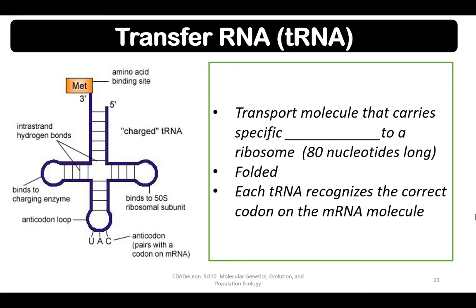Transfer RNA or tRNA is a transport molecule that carries a specific amino acid to a ribosome. tRNA is about 80 nucleotides long. It is folded, and each tRNA recognizes the correct codon on the mRNA molecule. tRNA molecules have an anti-codon — for example, if the mRNA codon is AUG, the anti-codon on the tRNA is UAC.